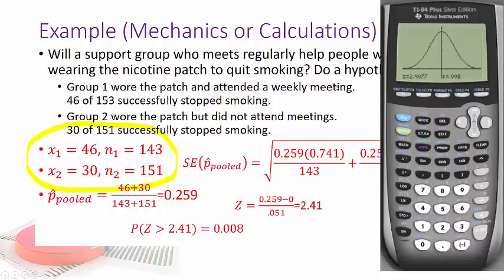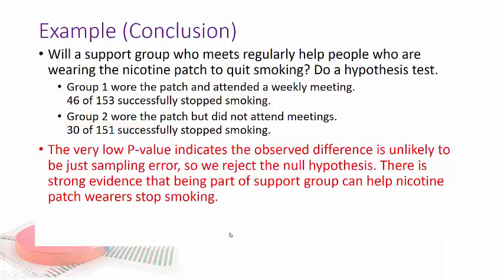So based on that, that's a very low P value. So we reject the null hypothesis, and we say, the very low P value indicates the observed difference is unlikely to be just a sampling error. So we reject the null hypothesis. There is strong evidence that being part of a support group can help nicotine patch wearers stop smoking.